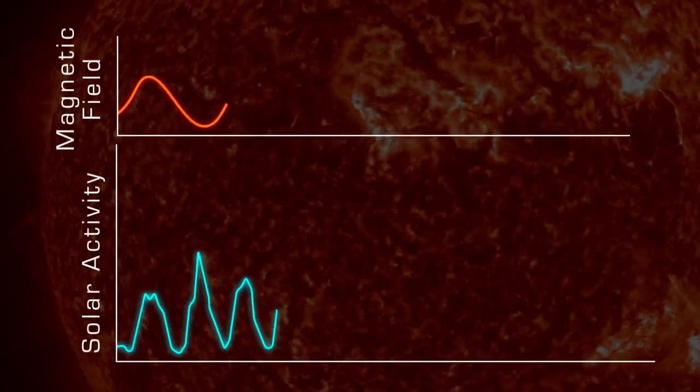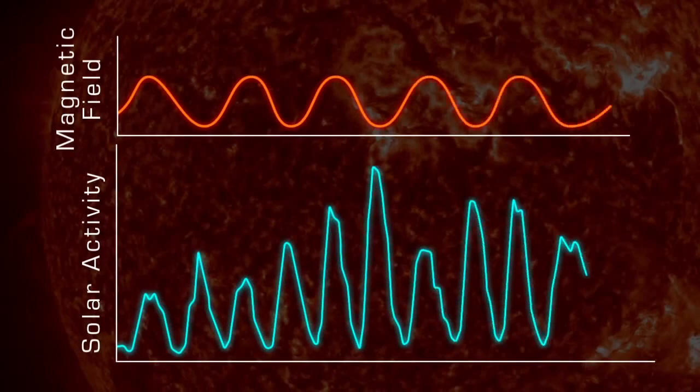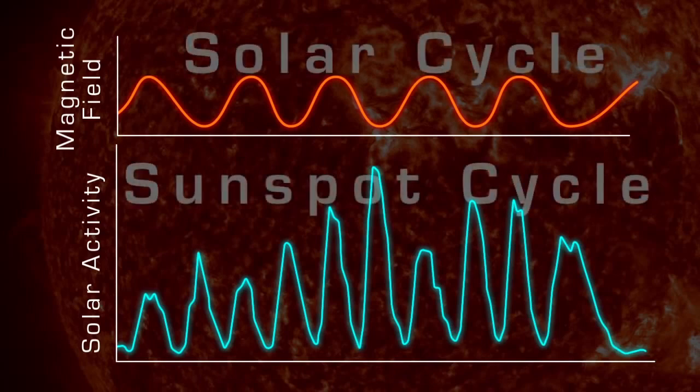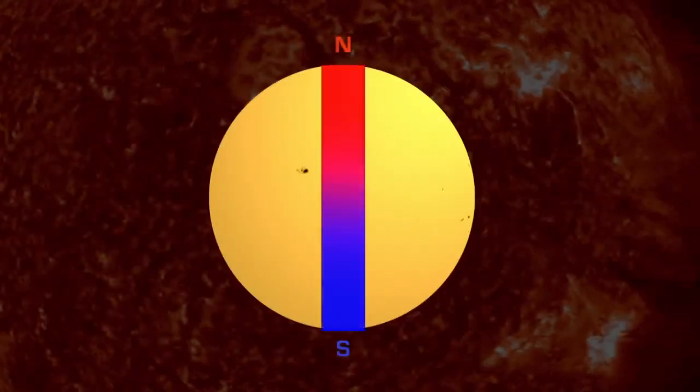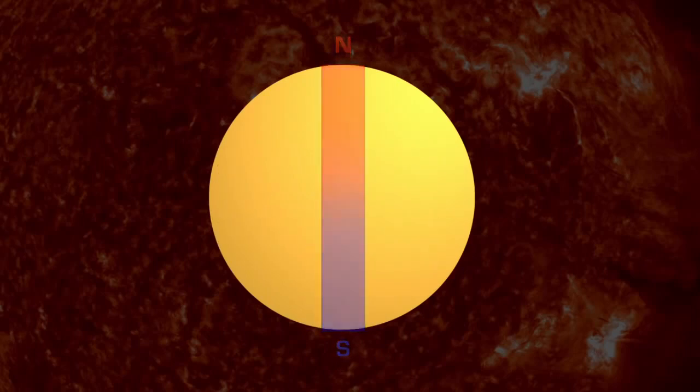The Sun's 11-year cycle is a symptom of a longer 22-year cycle called the solar cycle, or Hale cycle, which affects the Sun's magnetic fields. Every 11 years, the Sun's poles flip. North becomes south and south becomes north. So every 22 years, the poles return to the position where they started the cycle.